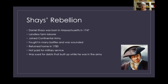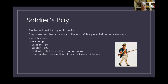Soldiers were supposed to get paid. They had enlisted for a specific period and were promised a bounty in either cash or land at the end of that period if they served the whole time. They were also supposed to get a monthly salary: a private was supposed to get six dollars, a sergeant eight dollars, and a captain twenty dollars per month. They also had to buy their own uniforms and weapons. When the war was over, most of them truly only got one month's pay in cash.